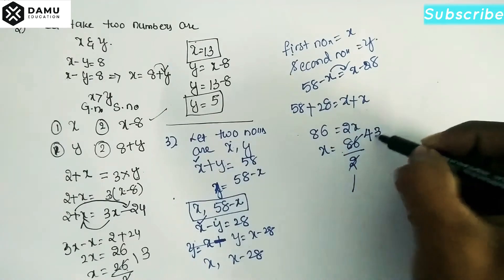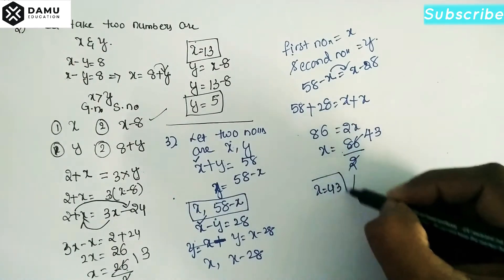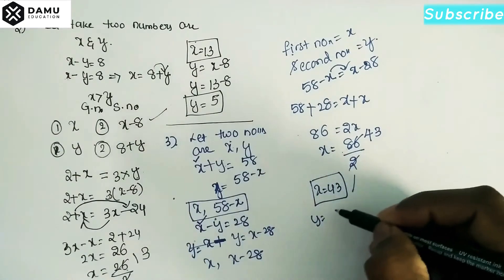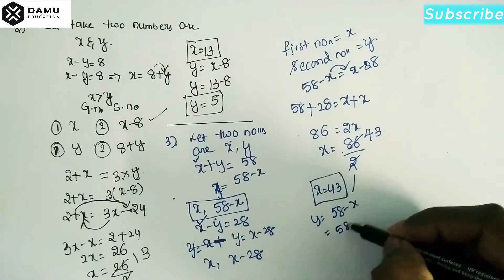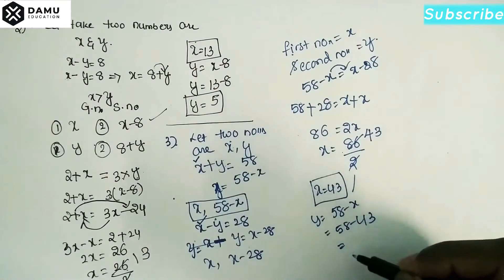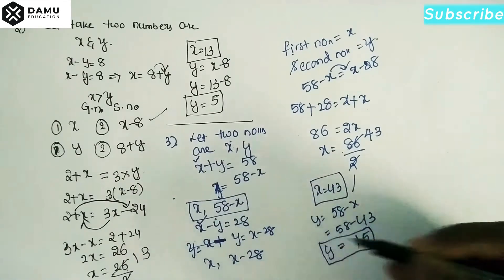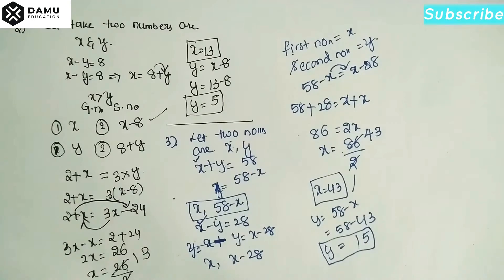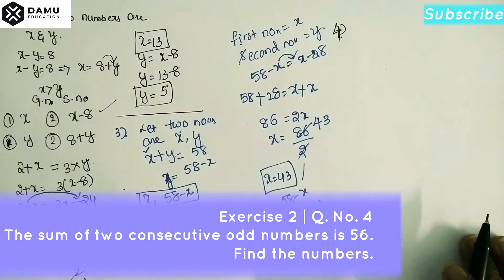Then x equals 86 divided by 2, so x equals 43. Then y equals 58 minus 43, which gives y equals 15. Thanks for watching. Now we are going to discuss the fourth question: the sum of two consecutive odd numbers is 56.